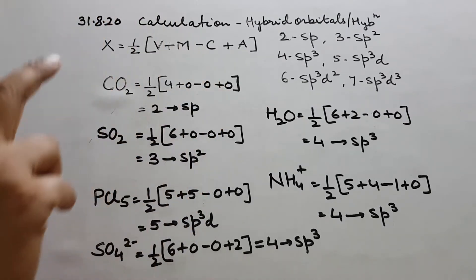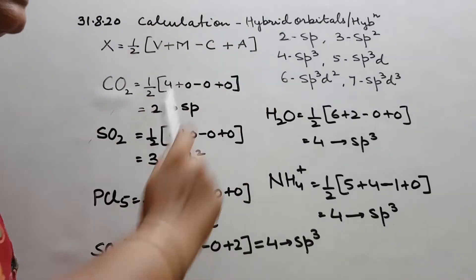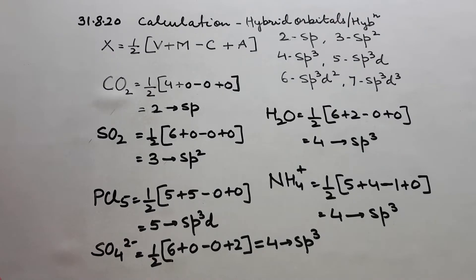So here we will just see the numerical value. Plus a. a is charge on anion. Formula is plus. Now suppose it is sulfate by chance. So we will say plus and then minus 2.